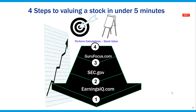What sources should you use to perform this exercise on other companies? There are four steps. First, go to EarningsIQ.com and check out the stock price of a company you are interested in — you can also screen stocks through the stock screening tool. Second, use SEC.gov to pull out the cash flow from operations, capital expenditures, and debt level. Third, use GuruFocus.com to pull in the weighted average cost of capital. And lastly, fourth, perform the calculations.